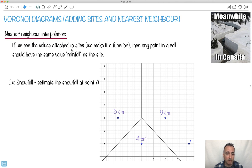I've seen them called rainfall. I thought, well, since I'm Canadian, I would call it snowfall. It doesn't matter, right? But the idea is whatever values there are, so let's say this one is attached to a value of 9 centimeters of snowfall.